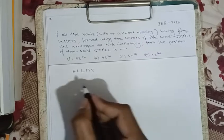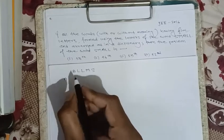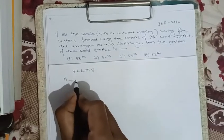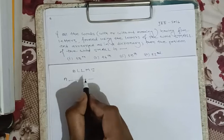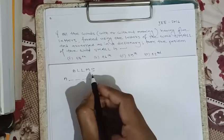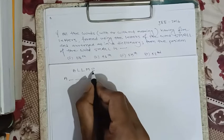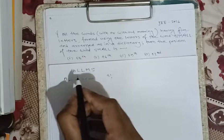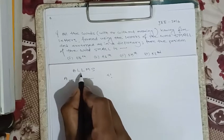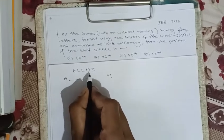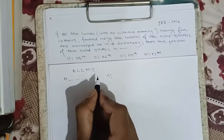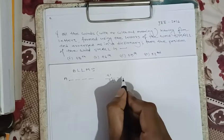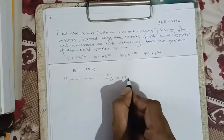Now we count the words starting with 'a'. The words have 5 letters, so we fix 'a' and arrange the remaining 4 letters. These 4 letters can be arranged in 4 factorial ways. However, since there are 2 l's, we divide by 2 factorial. This gives 4!/2! = 12 words.